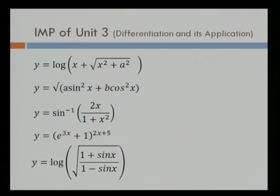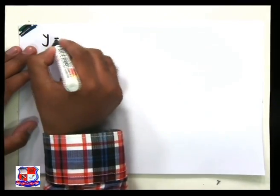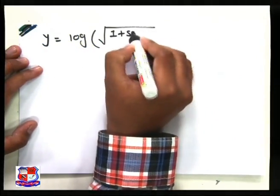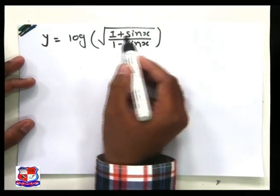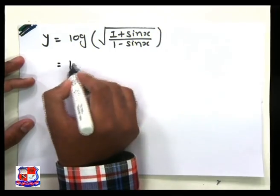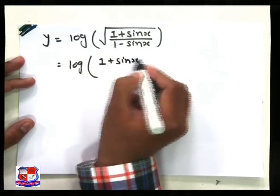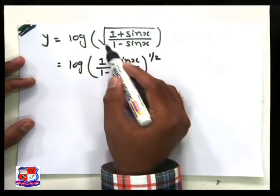Our next example is: y is equal to log of the square root of (1 plus sin x) divided by (1 minus sin x). First of all, we write it as y equals log of that expression. Before using the differentiation process, we ignore the square root and replace it with the power 1/2, so we can write (1 plus sin x) upon (1 minus sin x) raised to 1 by 2.